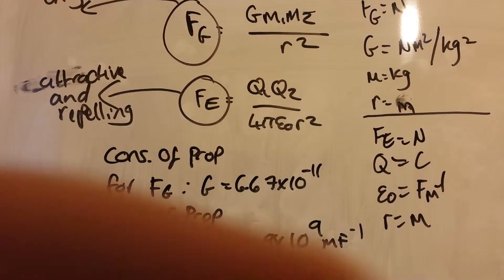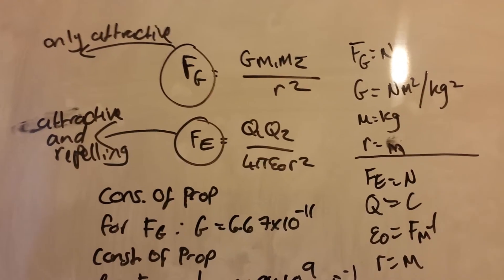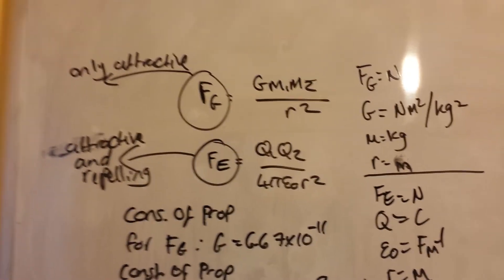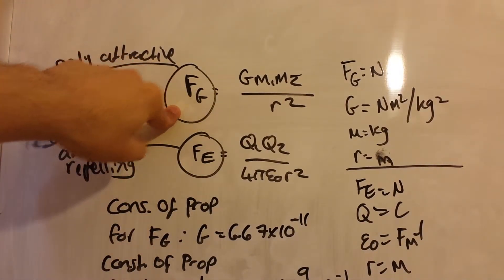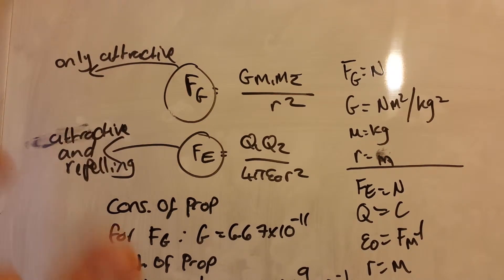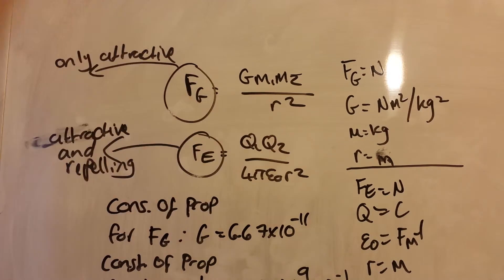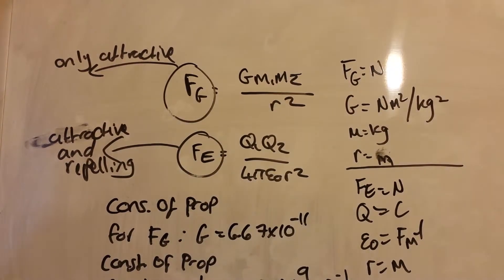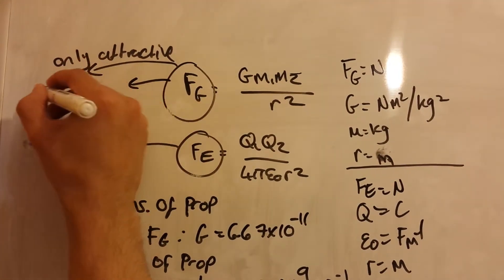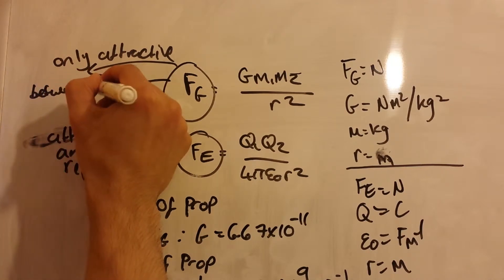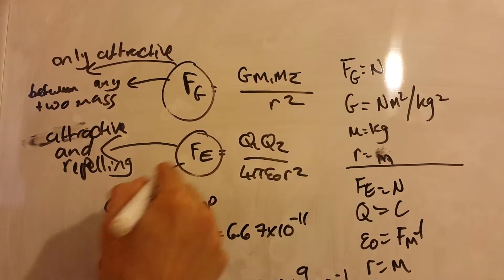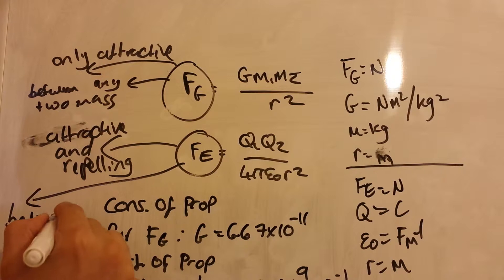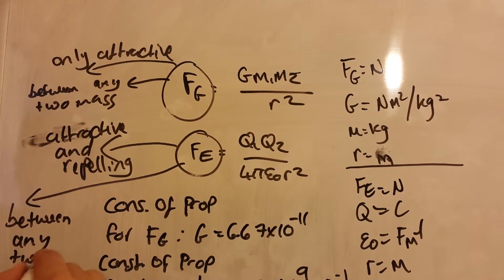What are the other big differences? Well, the other big difference is that the gravitational force is only between any two masses, but the electric force is between any two charges.